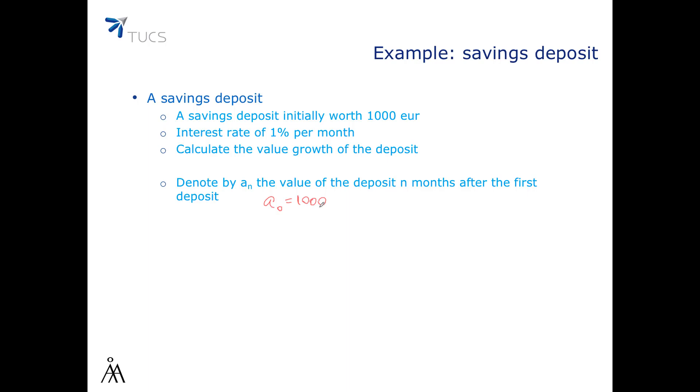The difference in the deposit after one month is exactly the interest that we gained, which is the interest rate times the amount in the deposit. So, we will write the model like this: a(n+1) minus a(n), which we denote sometimes by delta a(n), is 0.01 times a(n). In other words, a(n+1) equals 1.01 times a(n). So, the model in this case is a(n) equals a0 times 1.01 to power n.